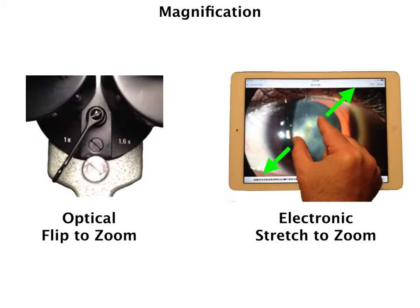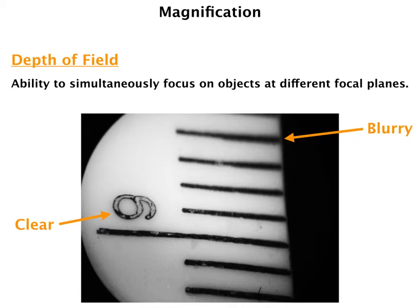Next, I'd like to talk about magnification. There are two ways to magnify an image while you're taking the photograph. The first, which we're most familiar with, is optical zoom — the magnification changer on the slit lamp. The second way is to electronically zoom with the stretch-to-zoom feature on the smart devices. There are pros and cons to both, and before we discuss that, we need to discuss a very important concept.